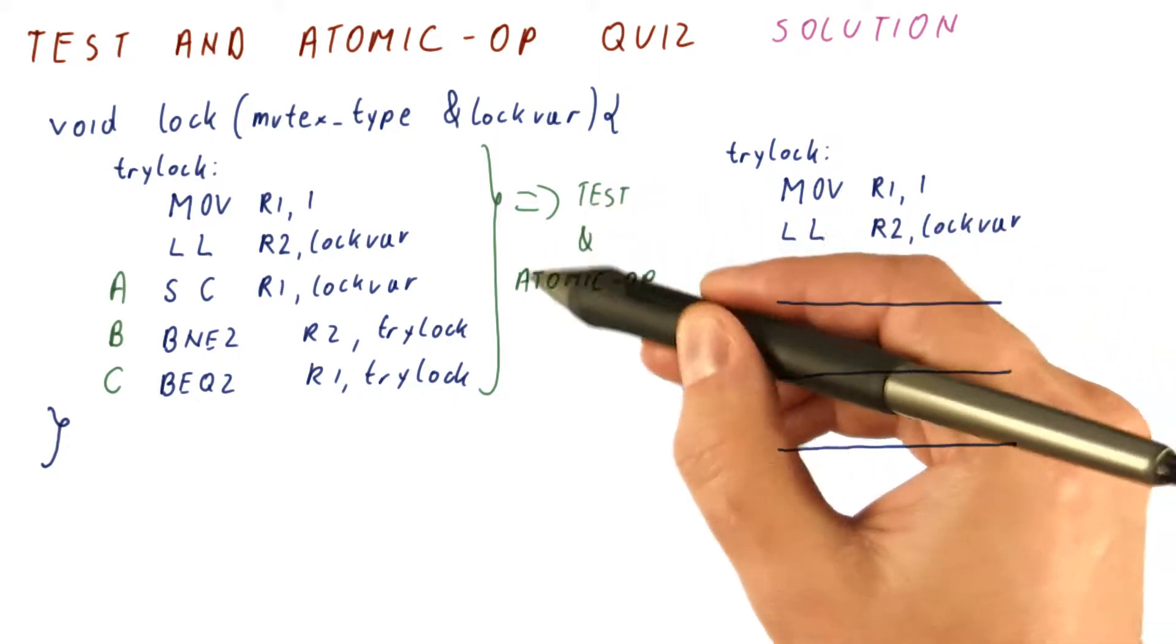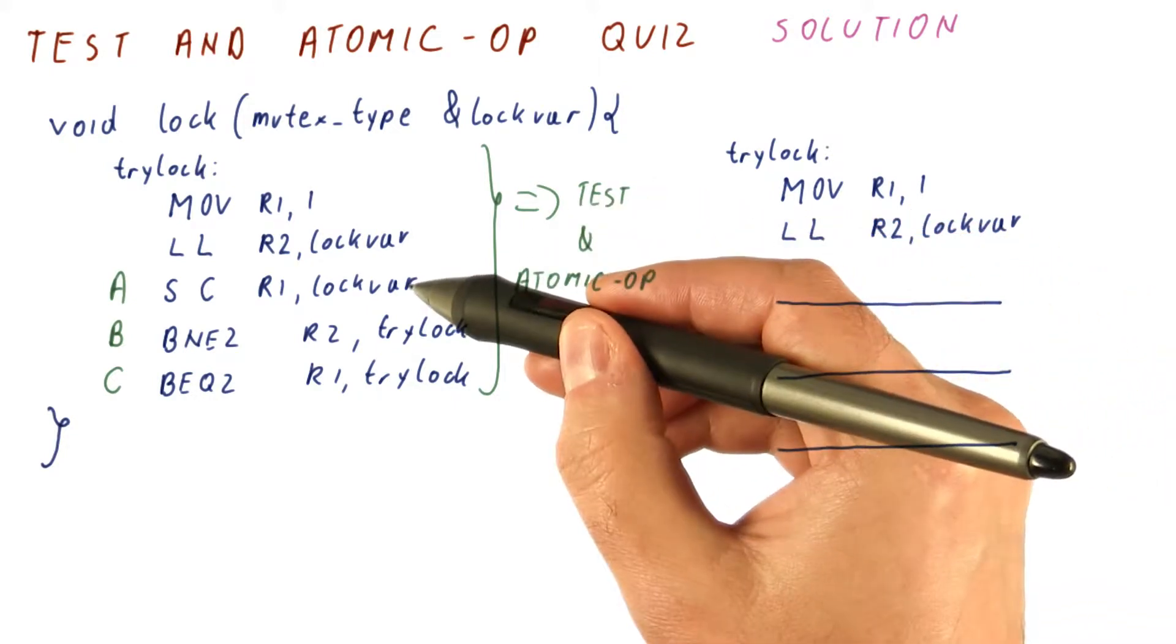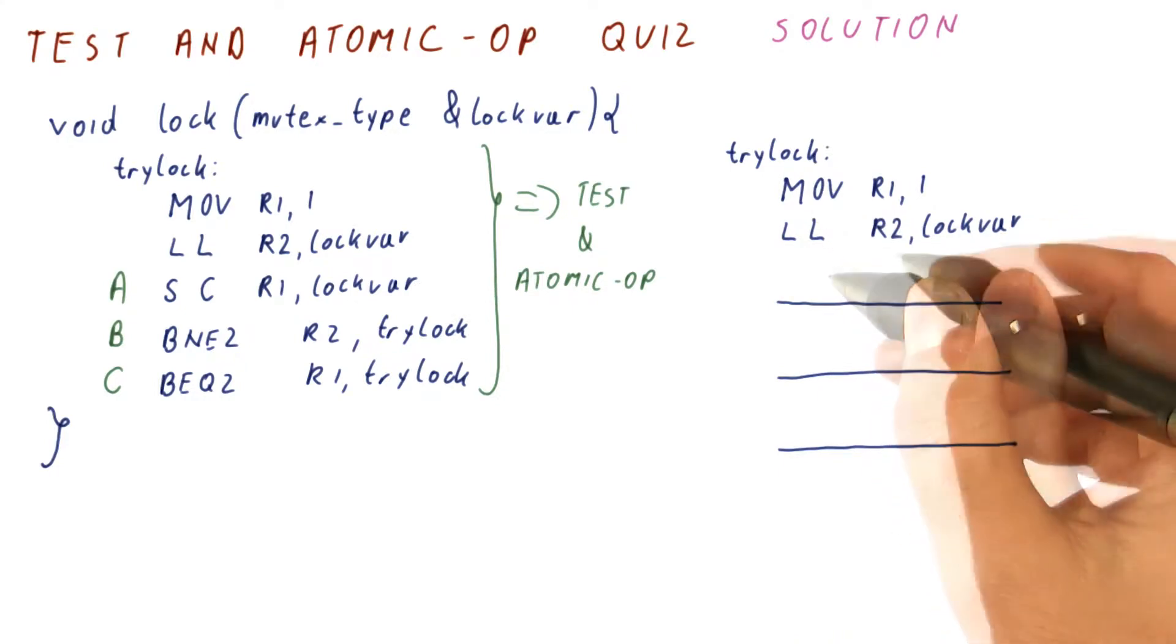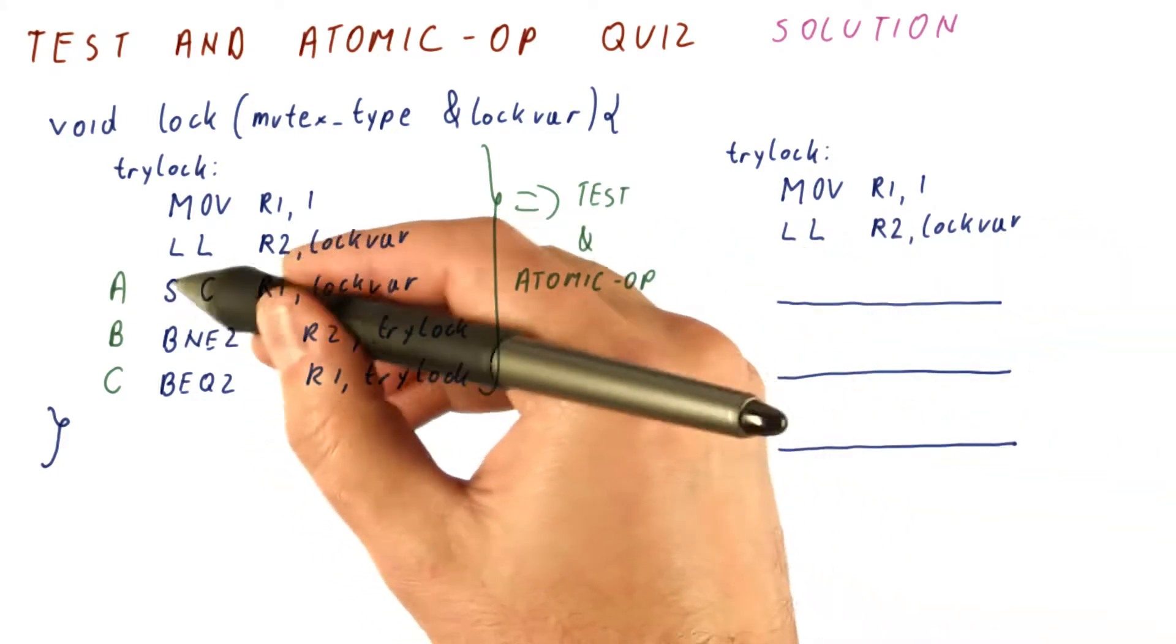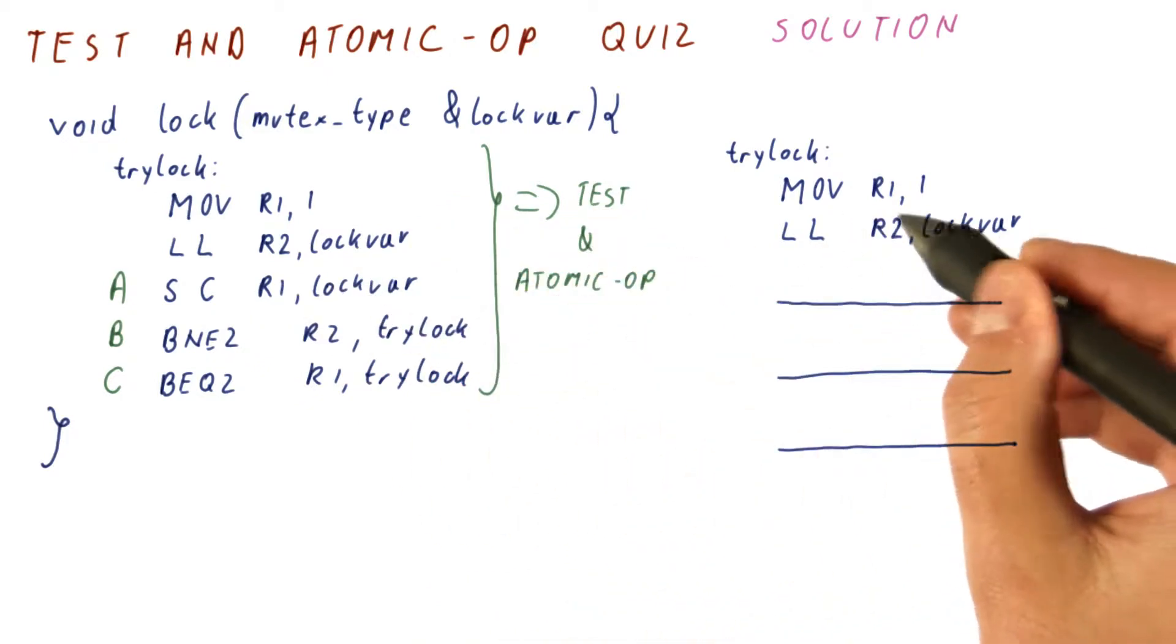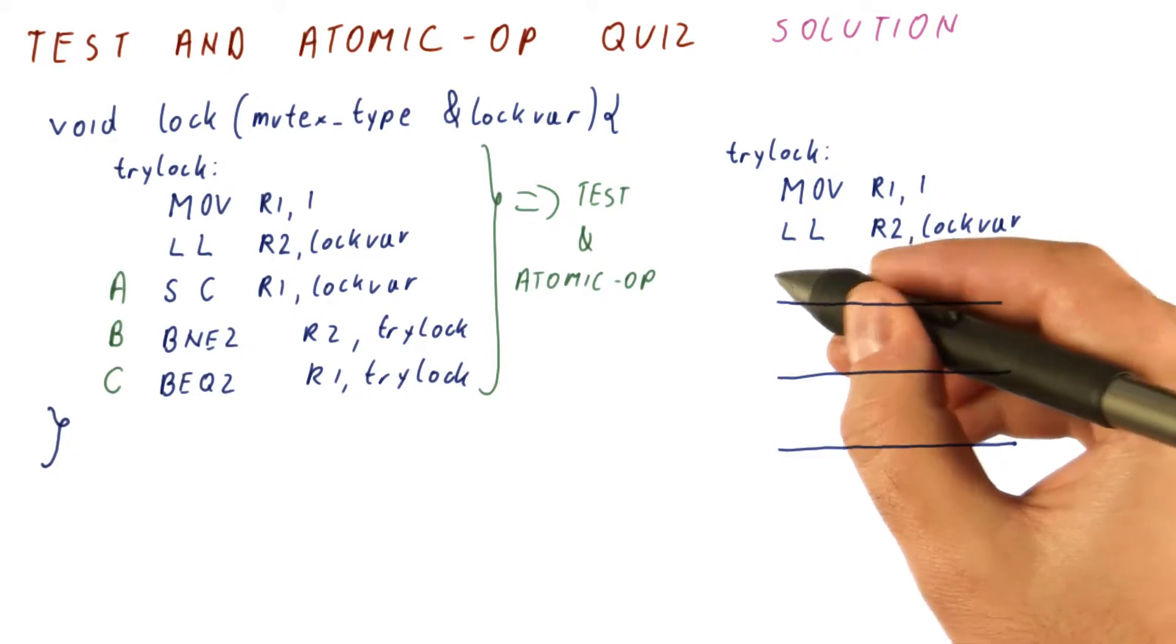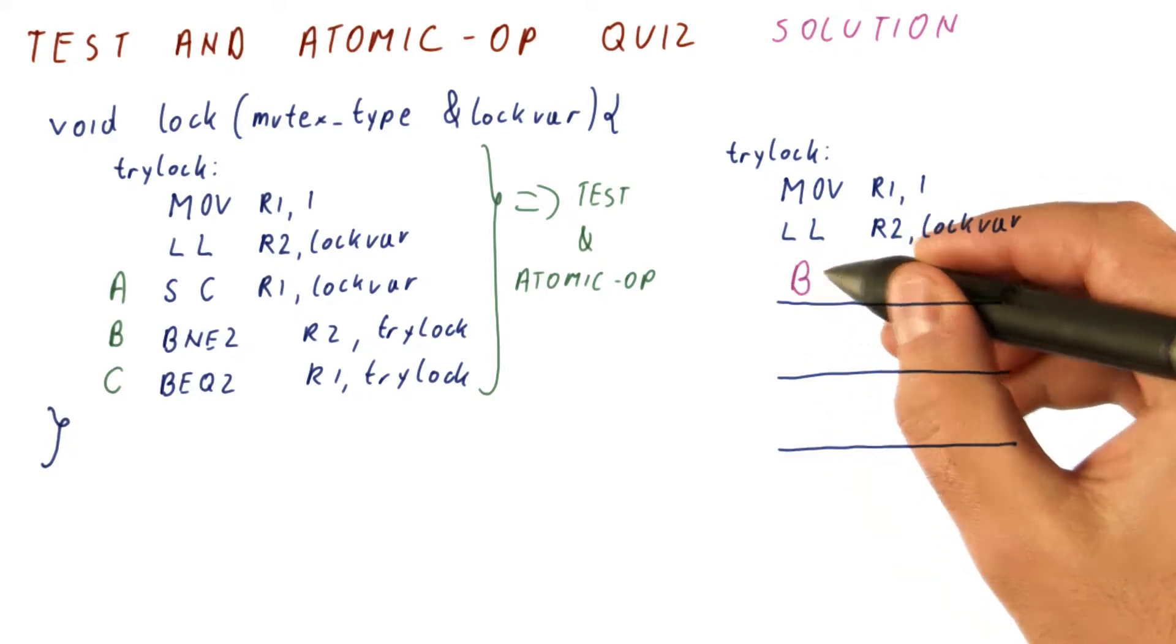The idea of test and atomic op is not to try the write until we see that the lock is free. So before trying the store, we should check whether the lock is free. That is done by using the B instruction here. So the correct answer should have been just B here.